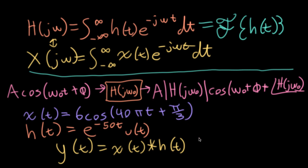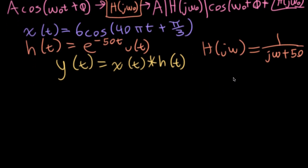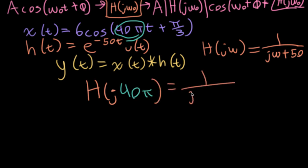In a previous lecture, we determined what the Fourier transform of a decaying exponential was, and it looked a little something like this. It was 1 over j omega plus, we called it a at the time, which is basically what this 50 here is. So I'll write in 50. And now what I need to do to finish the problem is I need to evaluate the frequency response at the frequency going in, which here is 40 pi. So I'm going to plug 40 pi in for omega. And that gives me 1 over j 40 pi plus 50.